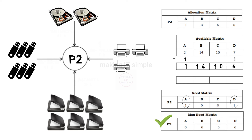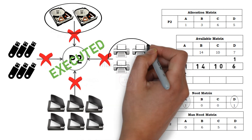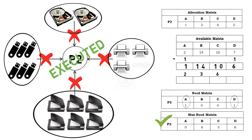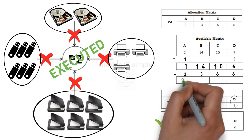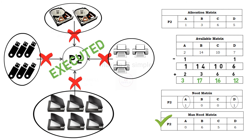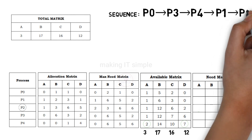As P2 will get its required resources it will complete its execution, and after completion release the allocated resources. It will release 2 instances of resource A, 3 instances of resource B, 6 instances of resource C, and 6 instances of resource D. So the available matrix will get updated. It will be 3, 17, 16, and 12. Available resources will get updated. P2's need is completed. P2 will get added to the sequence after P1.